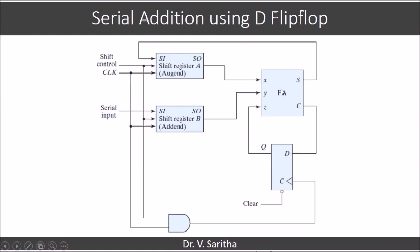Adder is a combinational circuit. So as soon as you give 1 clock pulse, LSB of A comes to X, LSB of B comes to Y, and Z value will be 0. So addition will be performed, X plus Y plus Z will be performed, sum and carry will be generated.